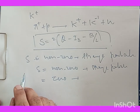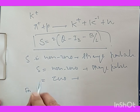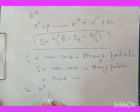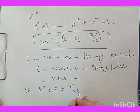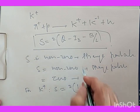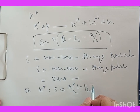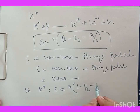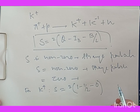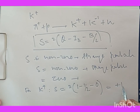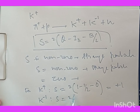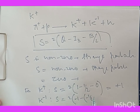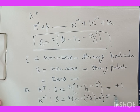If we calculate the strangeness for K-positive, we get S = 2(1) − 2(−½) − 0 = +1, since it has no baryon number. Similarly, for K-minus, S = 2(−1) − 2(−½) − 0 = −1.